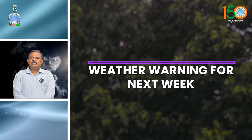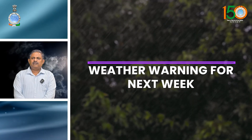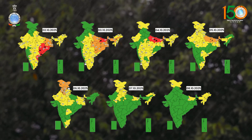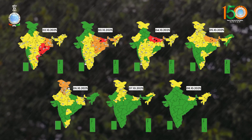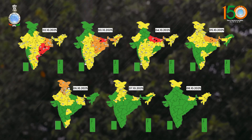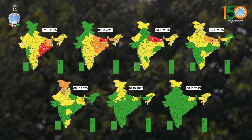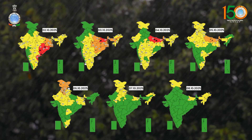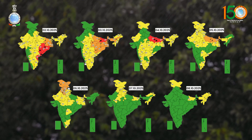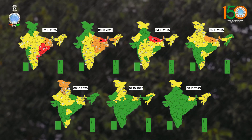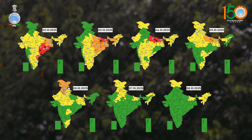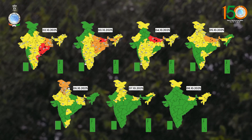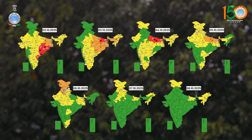Now we will see the detailed forecast and warnings at subdivision level for the next seven days with color-coded maps. For day 1, 2nd October, isolated extremely heavy rainfall is forecasted over north coastal Andhra Pradesh, Odisha, and south Chhattisgarh — red warnings are issued for these subdivisions. Orange warnings for heavy to very heavy rainfall are issued for Bihar, Jharkhand, and Gangetic West Bengal. For the 3rd, a red warning is issued for Bihar where extremely heavy rainfall at one or two places is expected.